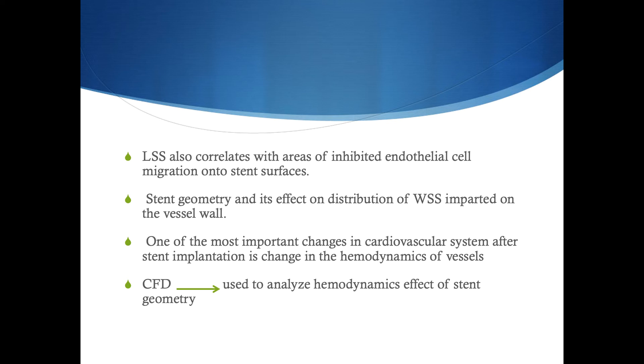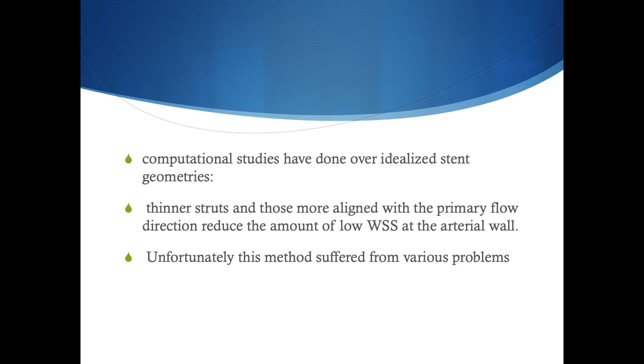Low shear stress also correlates with areas of inhibited endothelial migration onto the stent surface. The stent geometry affects the distribution of wall shear stress on the vessel wall. One of the most important changes in the cardiovascular system after stent implementation is change in hemodynamics. Computational studies help us idealize the geometry of the desired stent. The thinner structure, being aligned with the natural flow direction, will reduce the shear wall pressure to minimum. However, thinner structure will be fragile.